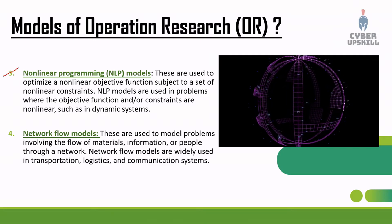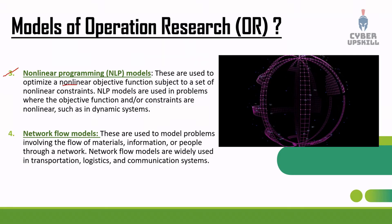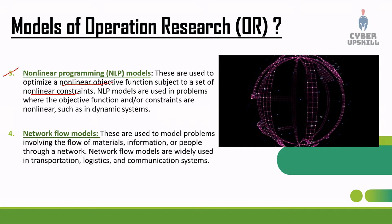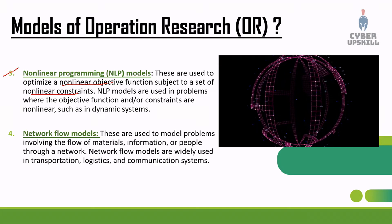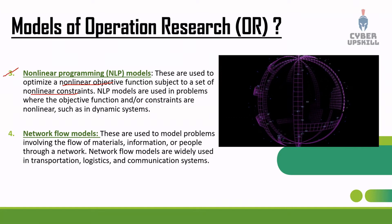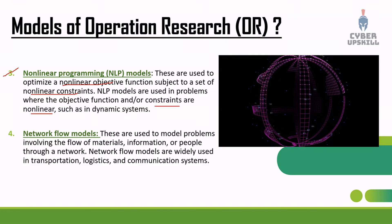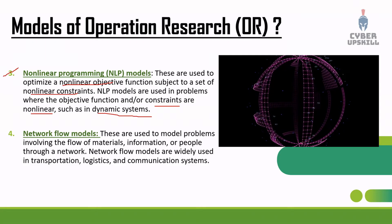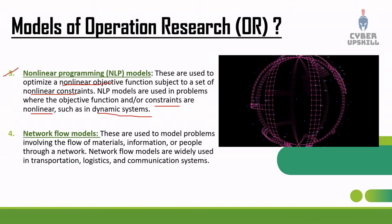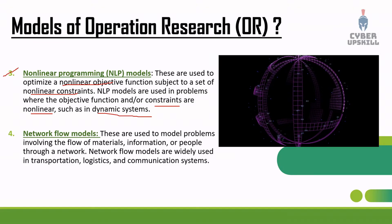The third model is non-linear programming, or NLP. NLP models are used to optimize a non-linear objective function subject to a set of non-linear constraints. Non-linear is different from linear. NLP models are used in dynamic systems, where the objective function and constraints are non-linear.